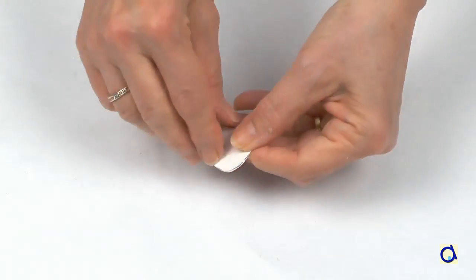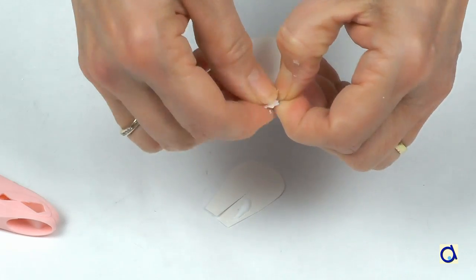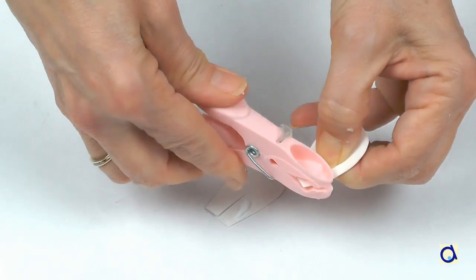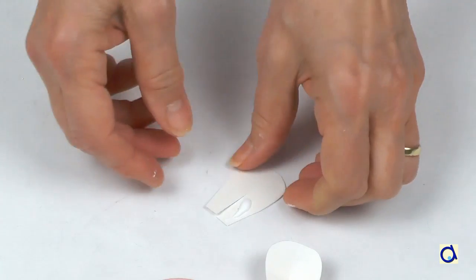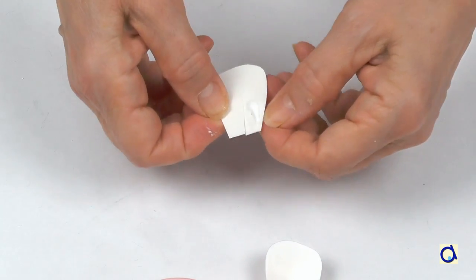Cut a slit in the middle of each ear. Put glue on one side of the slit that you cut and put the other side of the ear on the glue. This gives volume to the ear.